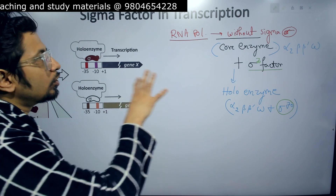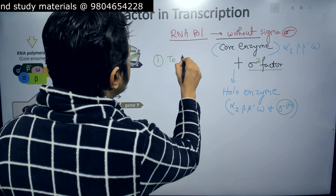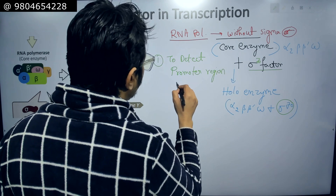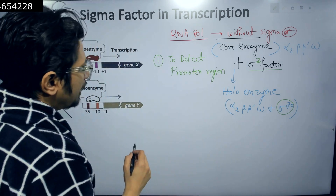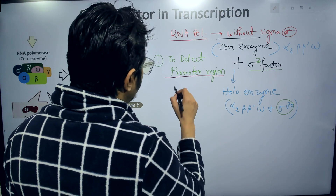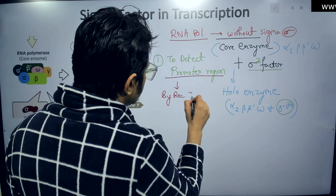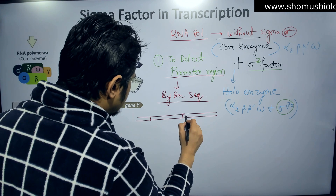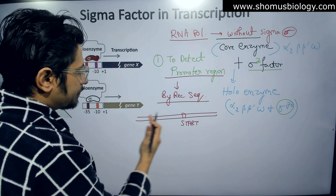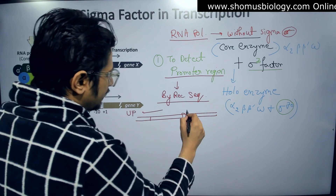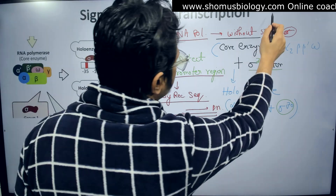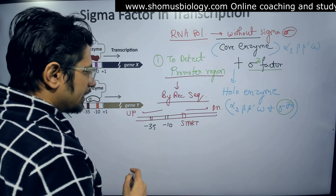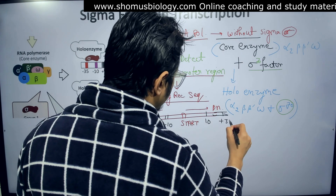The role of the sigma factor is to detect the promoter region of the DNA. How can a protein subunit detect a promoter region? Obviously, by recognizing a specific sequence. In prokaryotic DNA, if this is the start site, then upstream — to the left — we have the nomenclature minus 35 and minus 10. Downstream, we have plus 10, plus 35, plus 60, and so on. The start site is point zero from where the process begins.